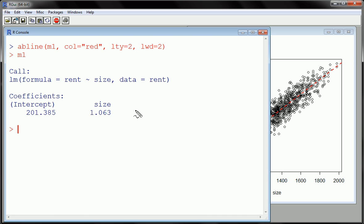So, first I'll write rent hat. So, the hat number means predicted. So, predicted rent equals 201. Let me just be brief here. Plus 1.06 times. I said 1,000 square feet, right? So, 1,000. So, I just plug in 1,000 there and I get a prediction for rent.